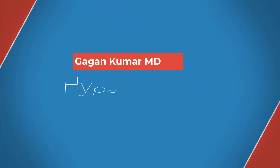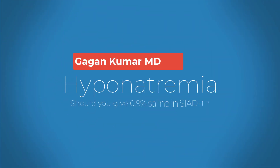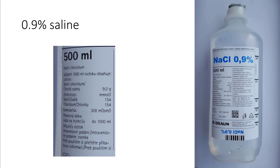Today we'll talk about an important topic that comes up during rounds: should you give normal saline (0.9% saline) to your patient with SIADH? Normal saline has 154 mEq of sodium and 154 mEq of chloride, giving an osmolality of 308 mOsm/L. There are 9 grams of sodium in 1 litre of saline — quite a lot when giving it to a heart failure or elderly patient. Use normal saline only when required.